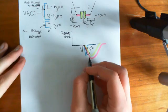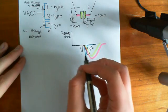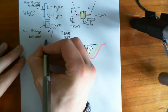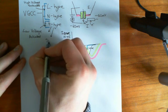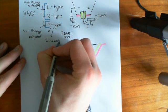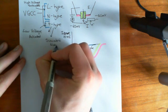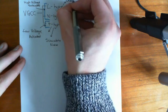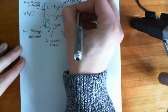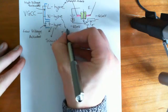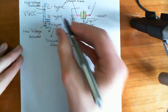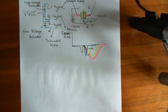Another distinguishing feature is that these channel types are found in different places. T-type can be found in the heart, specifically in the nodes — for instance, the sinoatrial node, where they are incredibly important. L-type is found in skeletal muscle and many other forms of muscle. N-type is found in neurons — neuronal type is the interpretation of what N stands for.